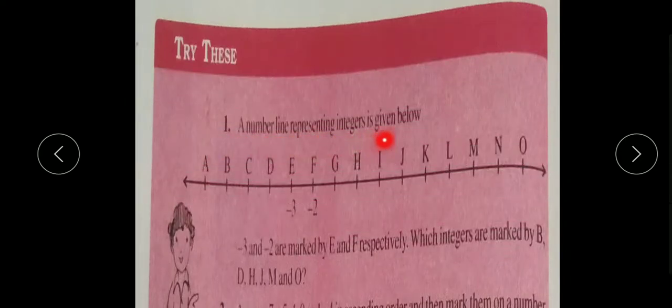A number line representing integers is given below. Here, minus 3 and minus 2 are marked by E and F. Which integers are marked by B, D, H, J, M, and O? So for these remaining alphabets given, which integers will come there - you have to mark. This number line and the letters given here, you have to mark which integers come at these alphabets. Complete this homework by today's date. I gave you this homework in zoom lecture also, and you have to complete it.